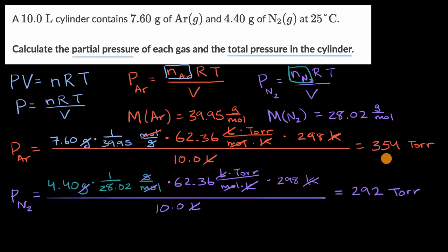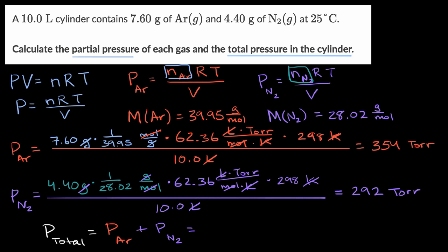We've now figured out the partial pressure of each gas. To find the total pressure, that's just the sum of the partial pressures — the partial pressure of argon plus the partial pressure of molecular nitrogen. So the total pressure is 354 plus 292, which equals 646 torr. And we are done.